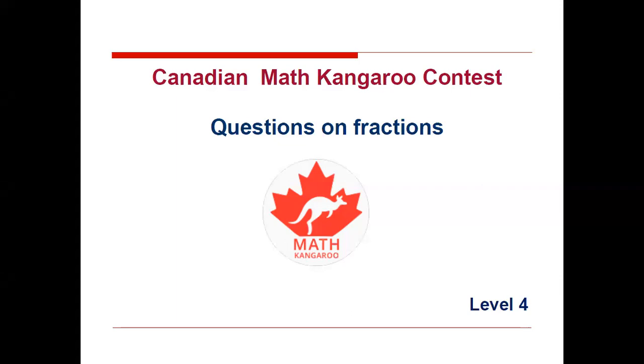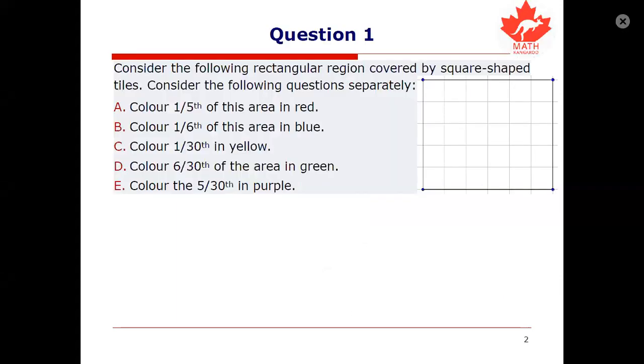Here's a question that is fairly intuitive just to start off with. Consider the following rectangular region covered by square shaped tiles. Let's consider each of these things separately. So again you don't have to color it on one single picture. You can consider these separately.